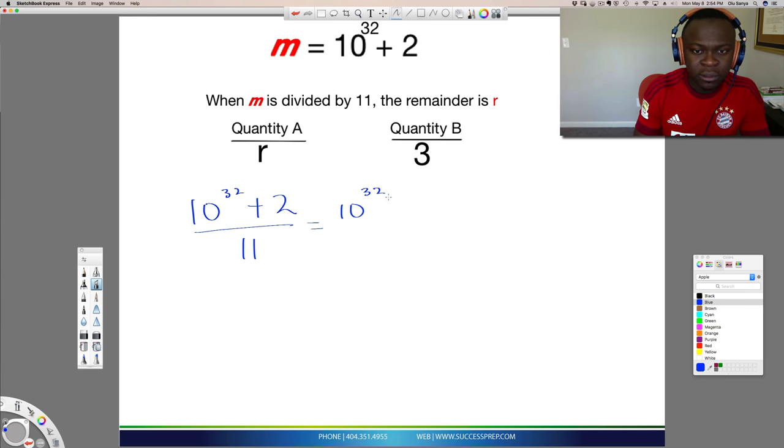So what I suggest you do is to break this question down. So say it's 10 to the 32 over 11 plus 2 over 11. So what is this doing? This is a technique I use a lot. If you have a number at the bottom, just break it under each of the numbers up top and have it divided under each one, especially when there's a plus or minus. It doesn't work if it's a times or multiplication, but if it's a plus or minus, you could split the denominator under each term like I just did.